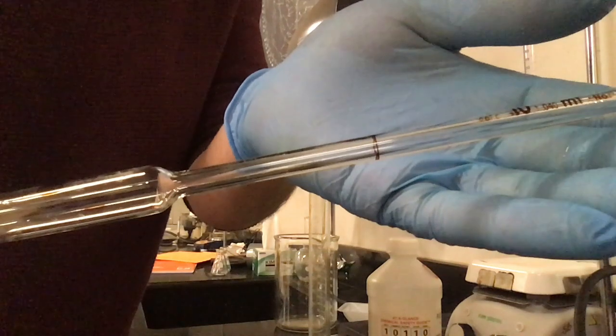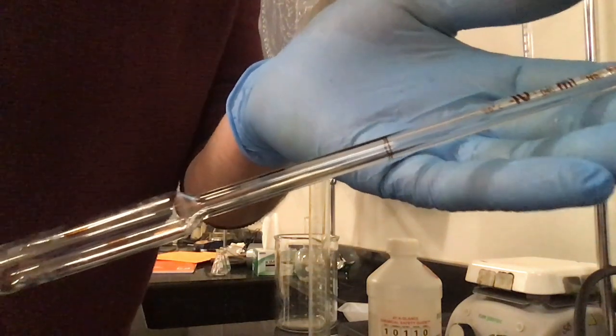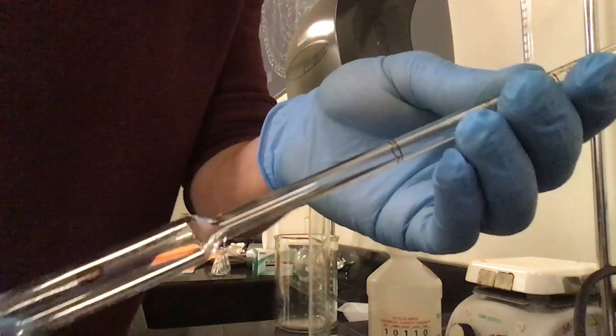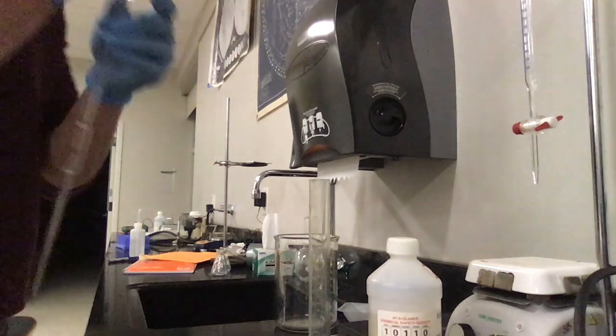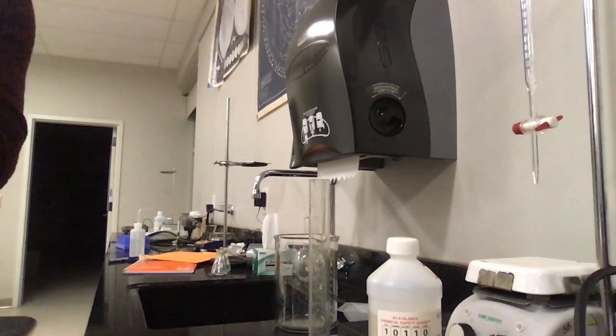And as you guys can see right there, that is my volumetric graduation, right? So I'm measuring all the way up to that line. I want to stop exactly there. This is a very, very precise amount of acid that I'll be able to get from this.